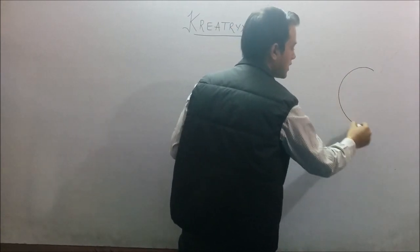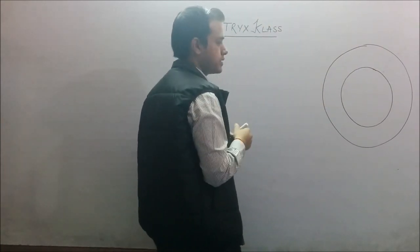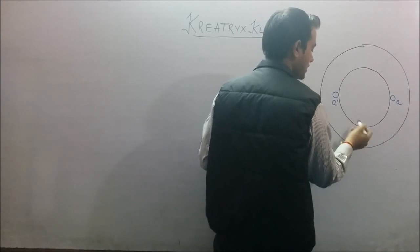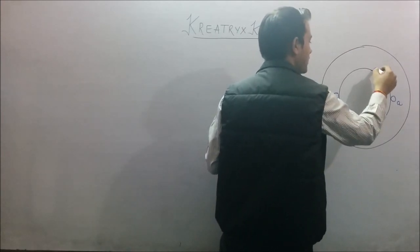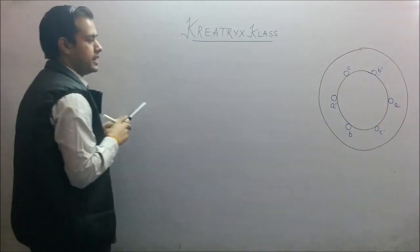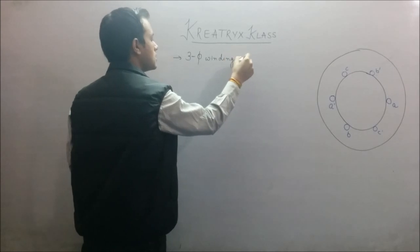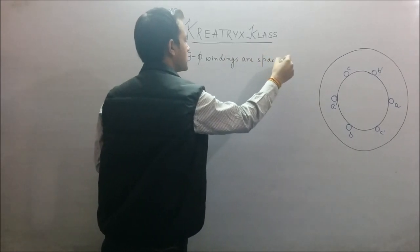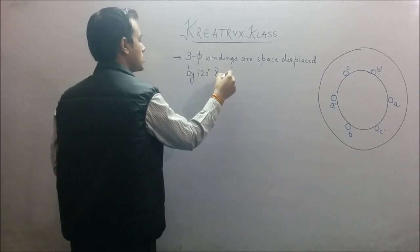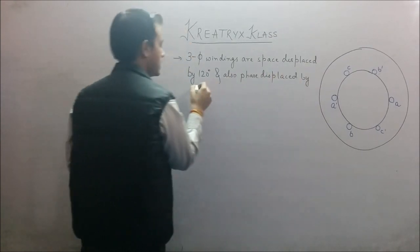How does the stator of the induction motor look? It looks something like this. Here we have three-phase windings placed on the stator, and those three-phase windings are space-displaced by 120 degrees. This is our A phase winding, then 120 degrees from this we have our B phase winding, and a further 120 degrees we have C phase winding. The three-phase windings are space-displaced by 120 degrees and also phase-displaced by 120 degrees.